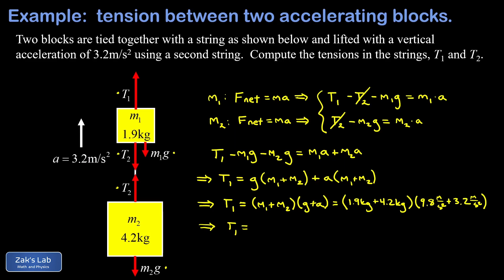Now we want to solve for T2. The easiest way to do that is to look at our second equation. If we take that second equation and add m2 g to both sides, we find that T2 is m2 g plus m2 a.